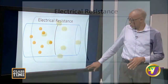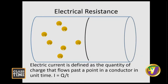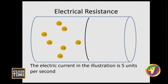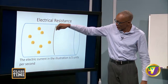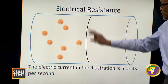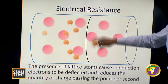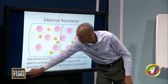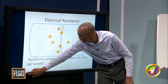Electric current is defined as the quantity of charge that flows past a point in a given time. In this demonstration, these are electric charges flowing in this direction. This is the point over which the electric charge is flowing.